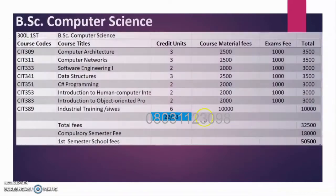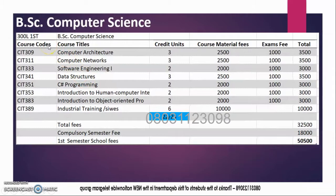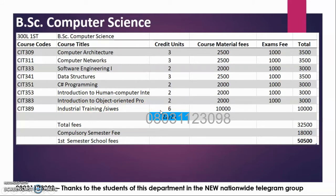We move to 300 level first semester. This is where you register your IT. IT is now registered as a project and it has six credit units. The cost for registering IT is ₦10,000 in every department that offers it — teaching practice too. Your total fee is ₦50,500. You are required to pass 22 credit units from this semester; you have registered 23, which means no course here is one unit, so you must pass all of them.